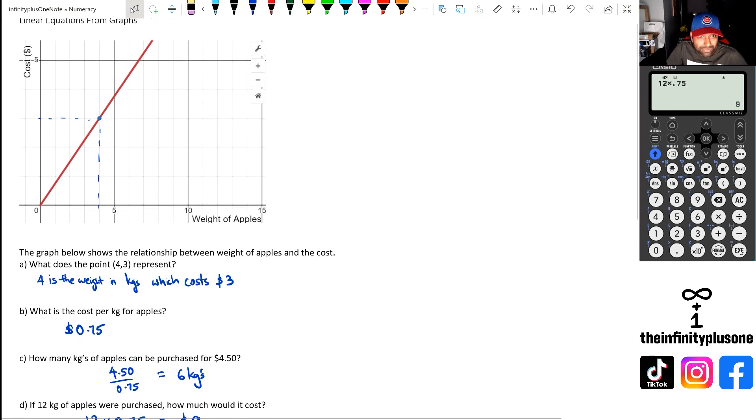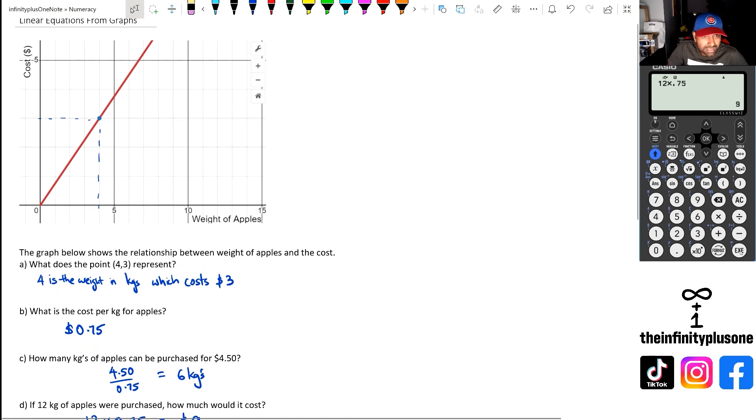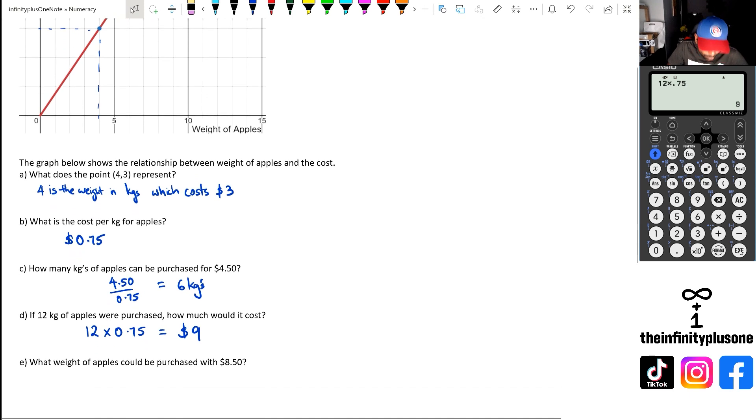The graph only goes up to 7.5. What weight of apples could be purchased with $8.50? We know that it costs 75 cents, so we're going to do $8.50 divided by 75 cents per kg. So 8.5 divided by 0.75. This is going to give me a recurring decimal, which is roughly 11.333 kgs.